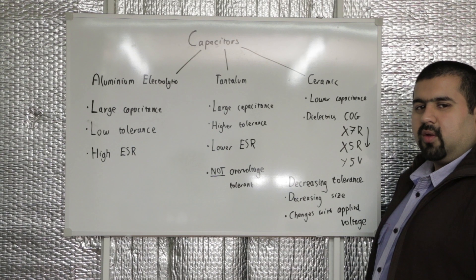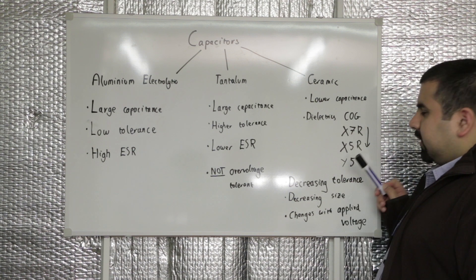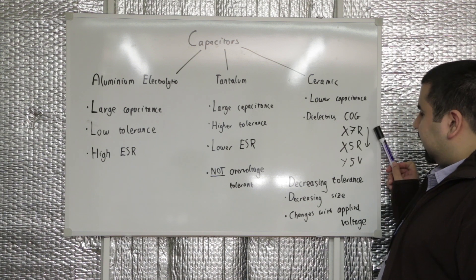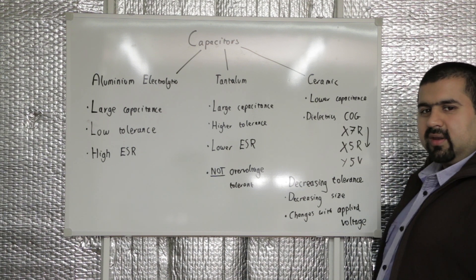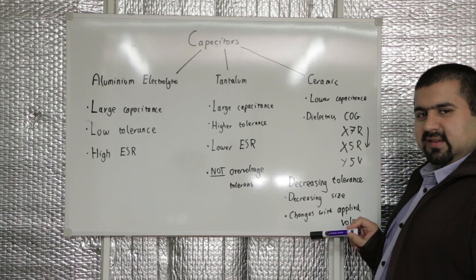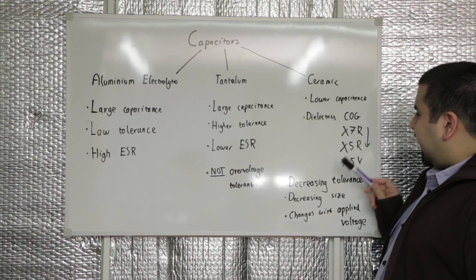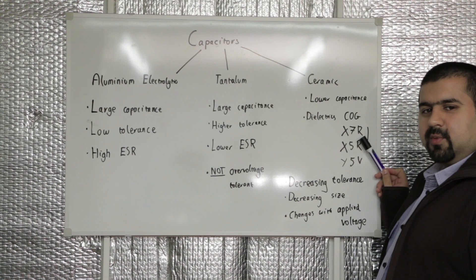Ceramic capacitors have a lower capacitance. These are the main dielectrics to choose from. They have decreasing tolerance in the order they are listed here. Also, for a given capacitance, they decrease in size. For X5R and Y5V, the capacitance changes with the applied voltage. We'd recommend using X7R for switch mode power supplies.